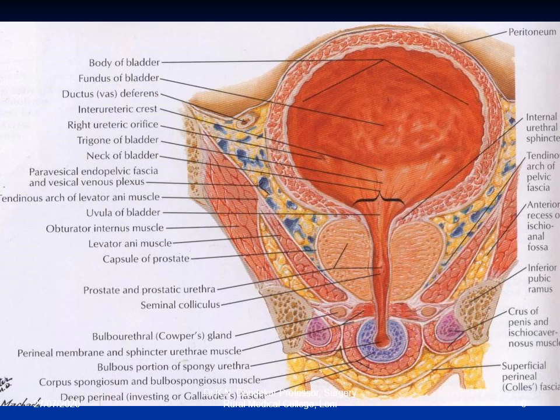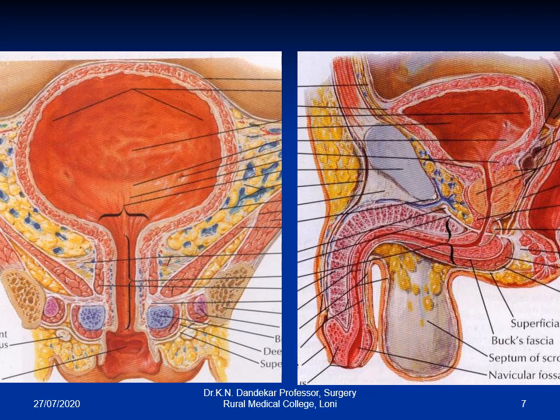In the coronal section, the bladder appears as a circular bag-like structure. The upper portion is called the fundus while the lower triangular area is called the trigone. The trigone is a sensitive part of the bladder — when the bladder is distended, the trigone initiates contraction leading to evacuation. The trigone is the area between the two ureteric openings and the internal urethral orifice, and it is continuous with the urethra.